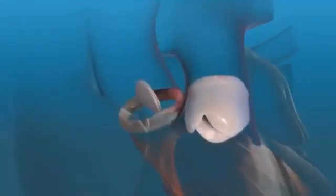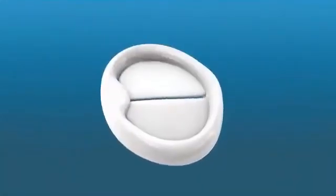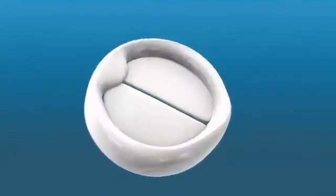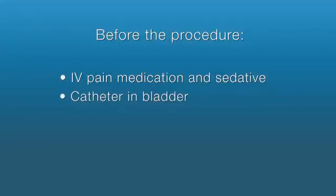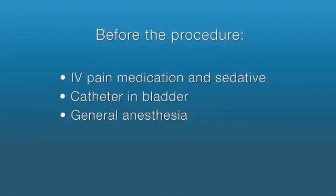An aortic valve replacement is performed to restore the valve to normal function. Before your procedure, an IV line will be started in your arm to provide fluids and medications. A catheter will be inserted into your bladder to drain urine. Aortic valve replacements are done under general anesthesia, meaning you will be asleep for the duration of the operation, and a tube will be placed through your mouth and into your windpipe to help you breathe during surgery.